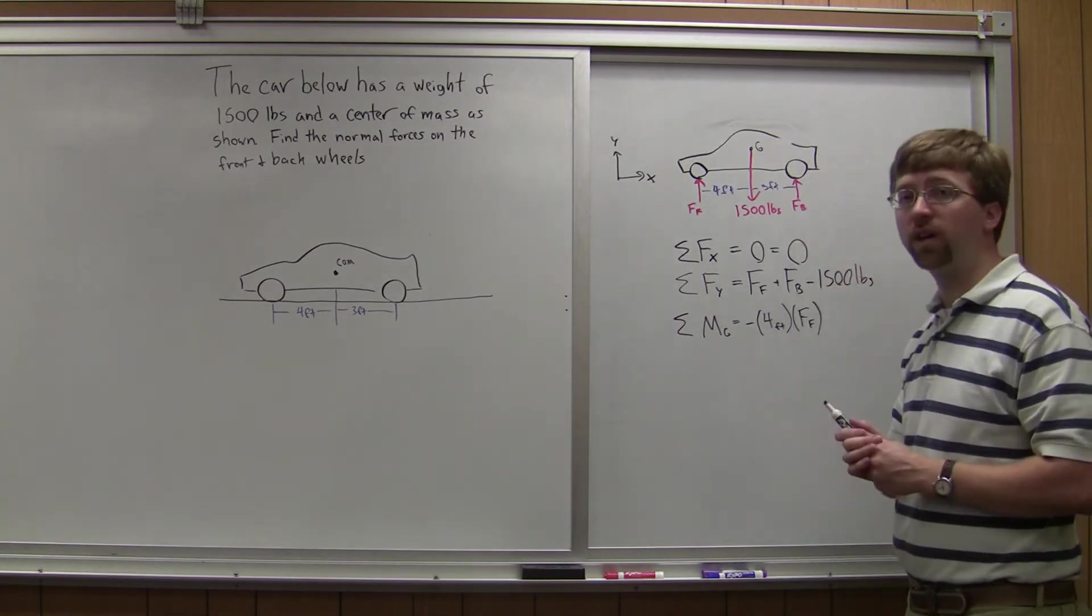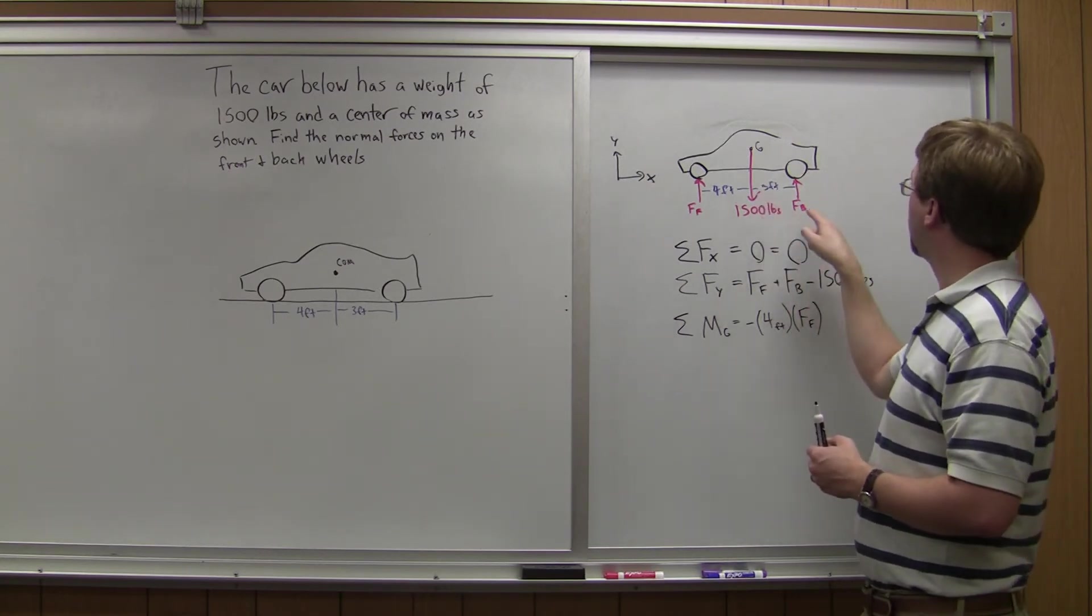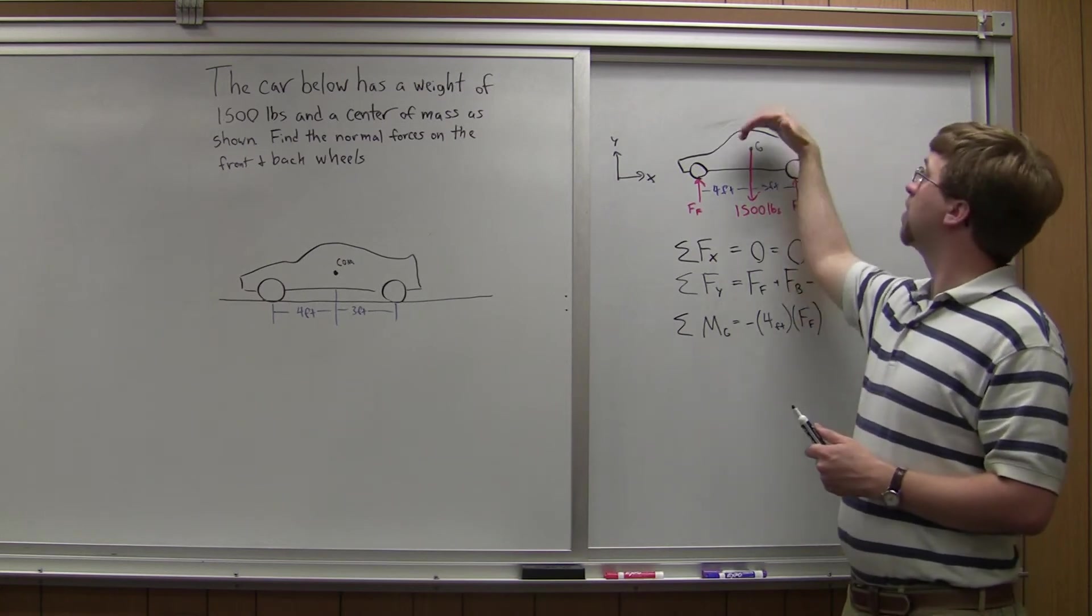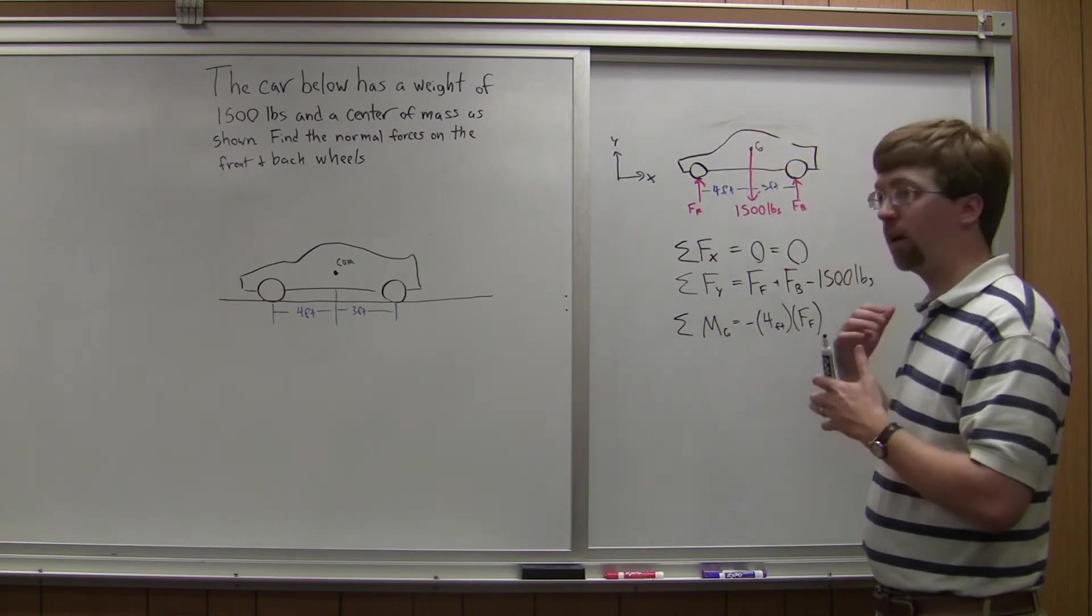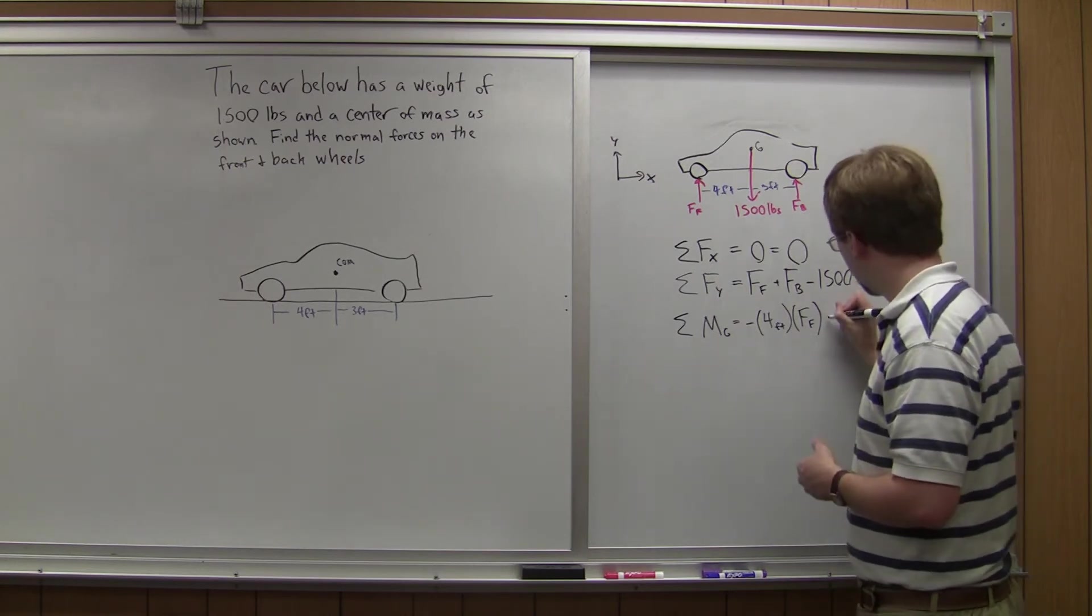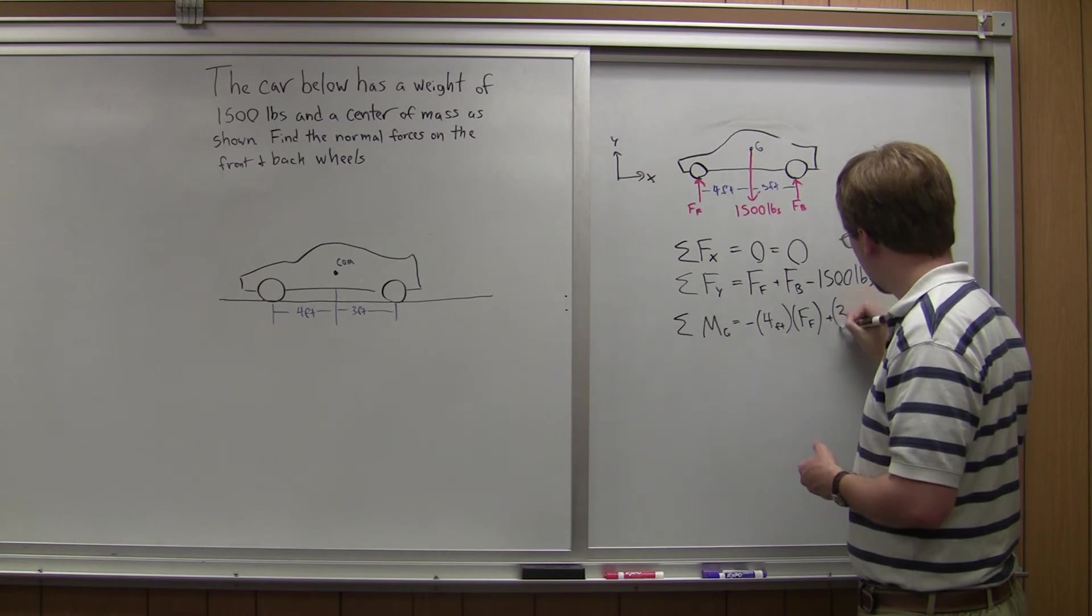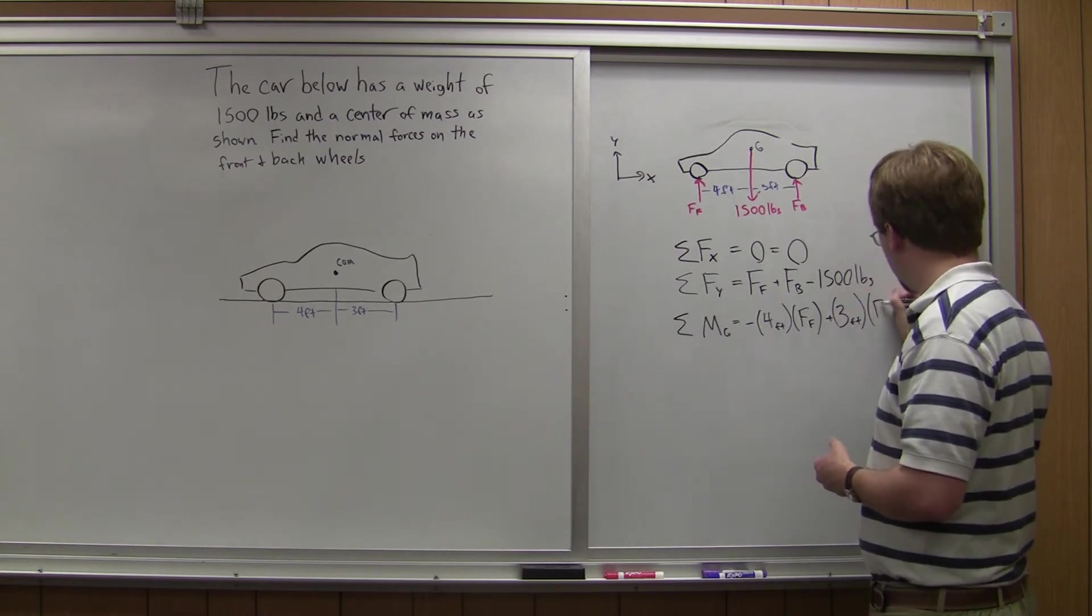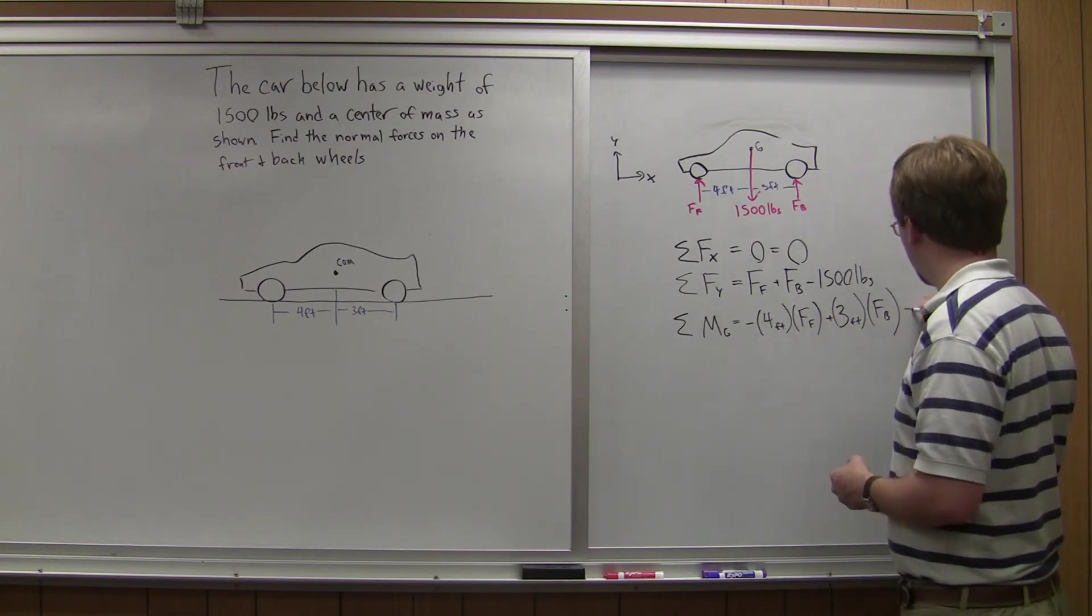On this back wheel, the normal force there, so Fb, it's going to be 3 feet, so distance times Fb, and it's going to cause a positive rotation, so that would be a positive moment. So plus 3 feet times Fb, and the sum of the moments has to be equal to 0.